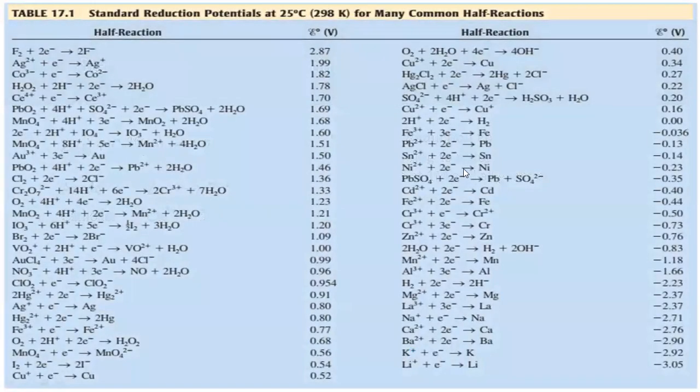So here, the following are the common half-reactions for different elements. So how are we going to use these values in finding the standard reduction potential for a galvanic cell?